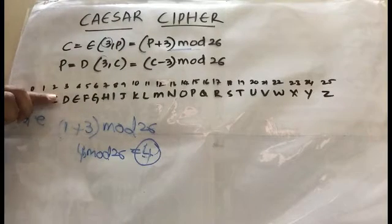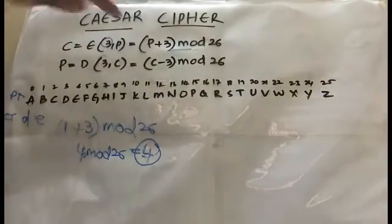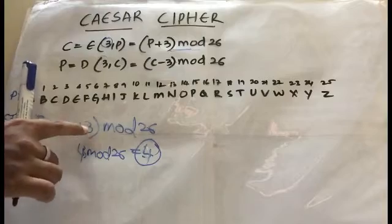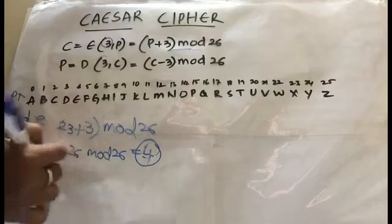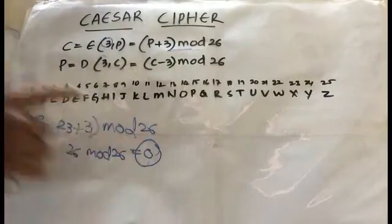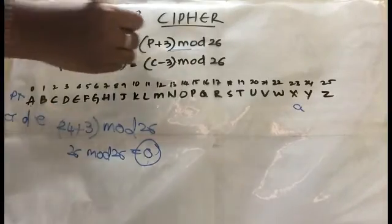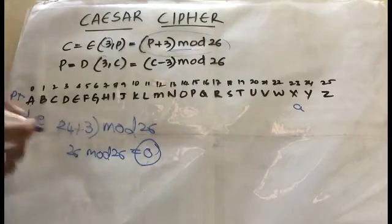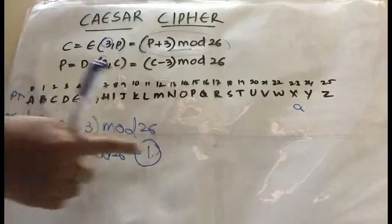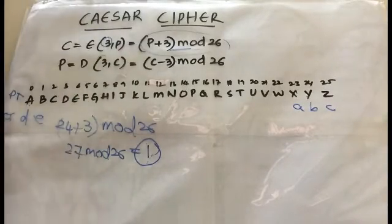Simply close the first three positions and write D, E, F, G, H, I, J in order. At the end you're left with X, Y, Z. For X (23): 23 plus 3 is 26, and 26 mod 26 equals 0, so X maps to A. For Y (24): 24 plus 3 is 27, 27 mod 26 equals 1, so Y maps to B. Similarly Z maps to C.